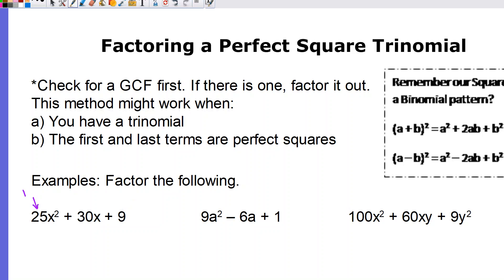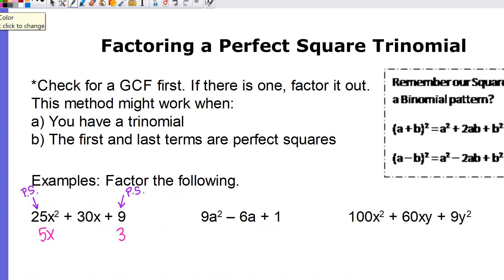Here, 25x² is a perfect square (PS), and 9 is also a perfect square. I'll take the square root of each: the square root of 25x² is 5x, and the square root of 9 is 3. Now I check: is the middle term equal to 2 times 5x times 3? That gives 10x times 3 = 30x. Yes, it matches! This is a perfect square trinomial. Since we already have our parts, the answer is (5x + 3)². The middle term was positive 30x, so the sign inside is a plus.